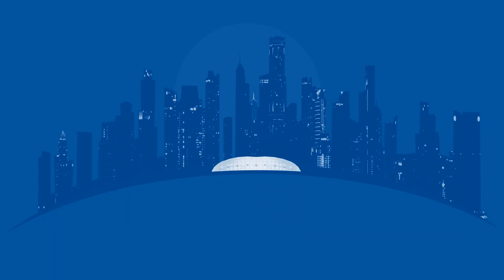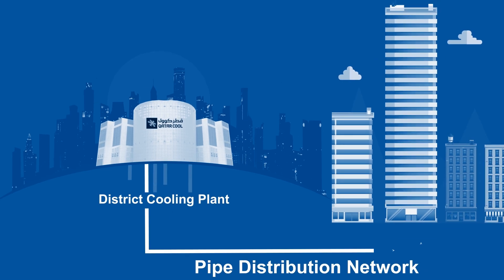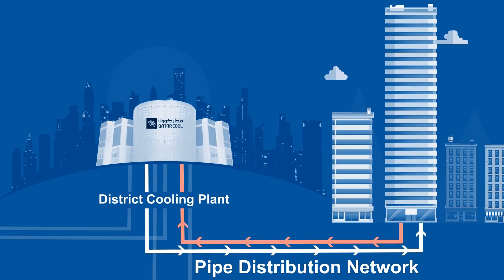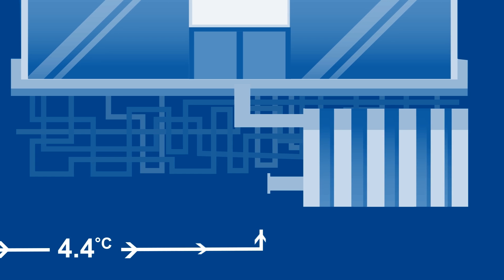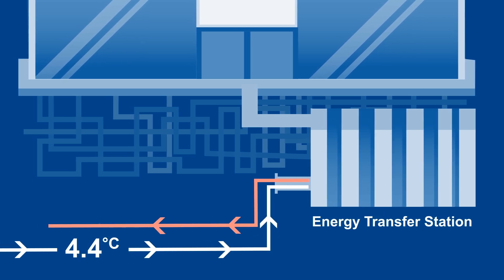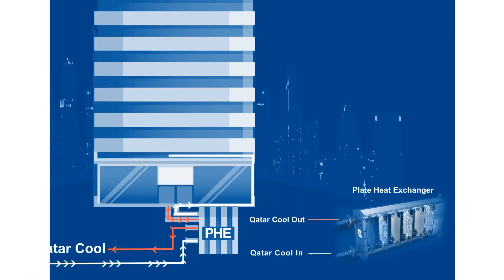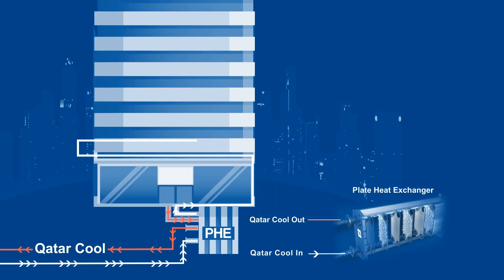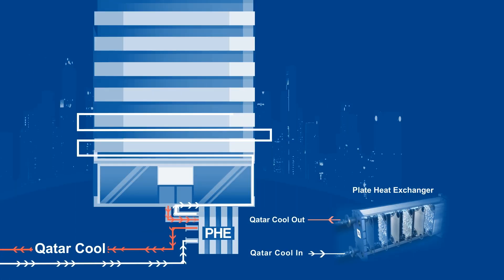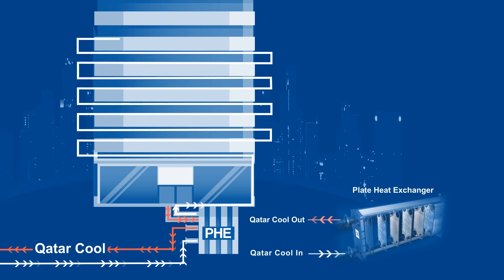It starts at a district cooling plant where the water is chilled and distributed through the pipe distribution network. The chilled water is pumped from the plant through the pipe distribution network at a temperature of 4.4 degrees Celsius. When the water reaches the energy transfer station in the basement, the chilled water is used to cool down the building's water through the plate heat exchanger.